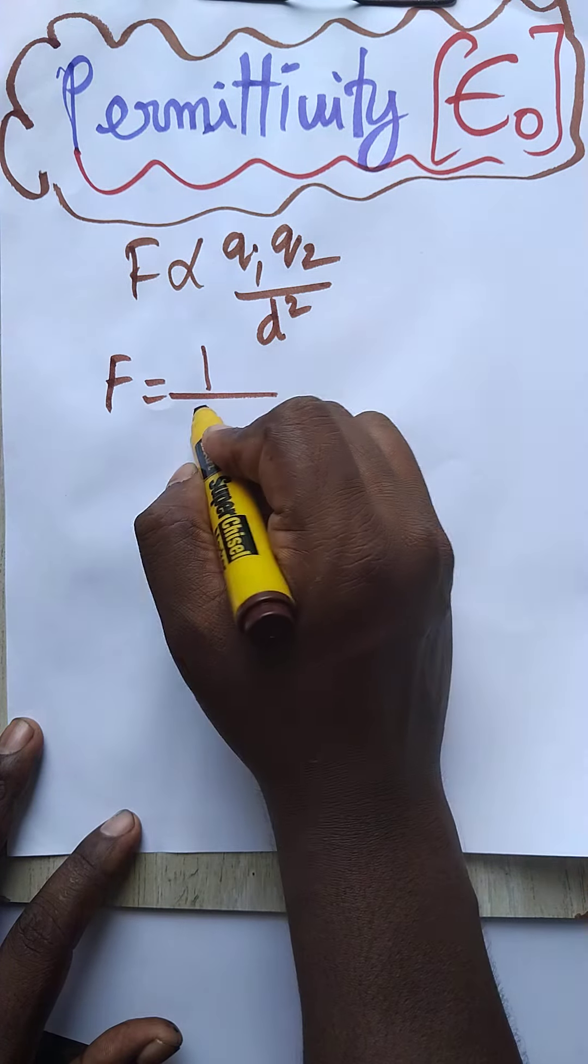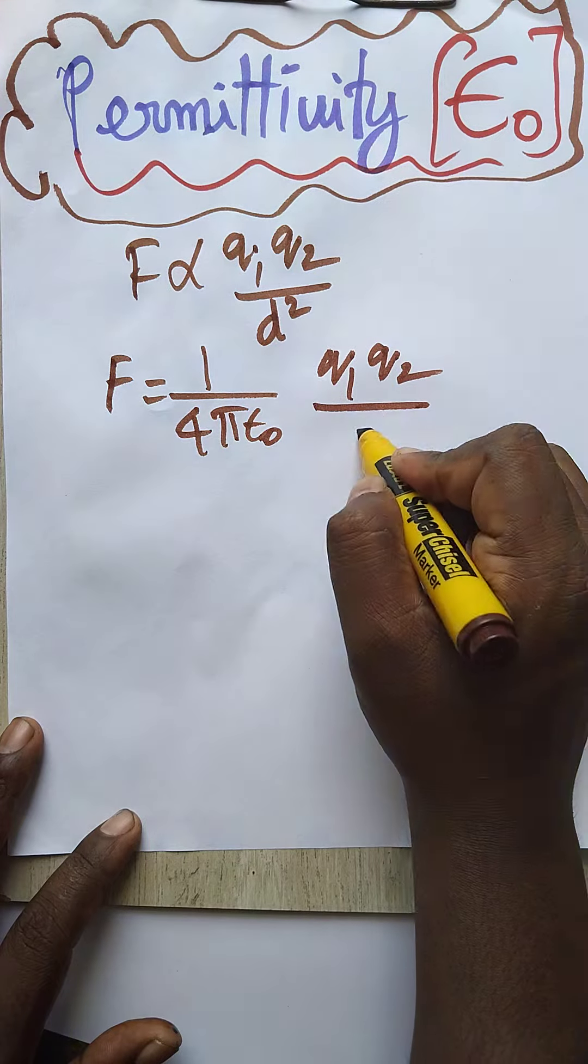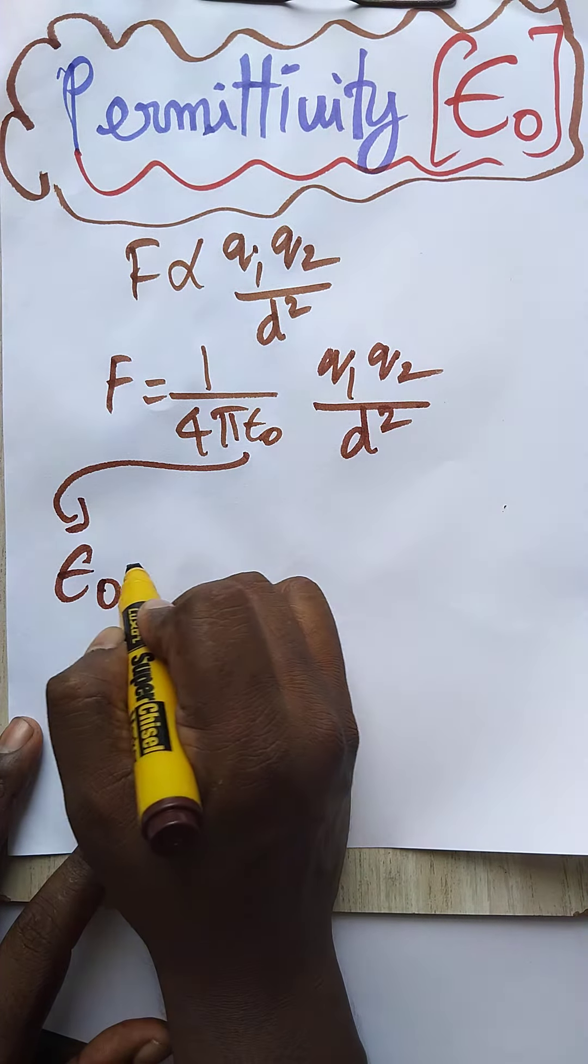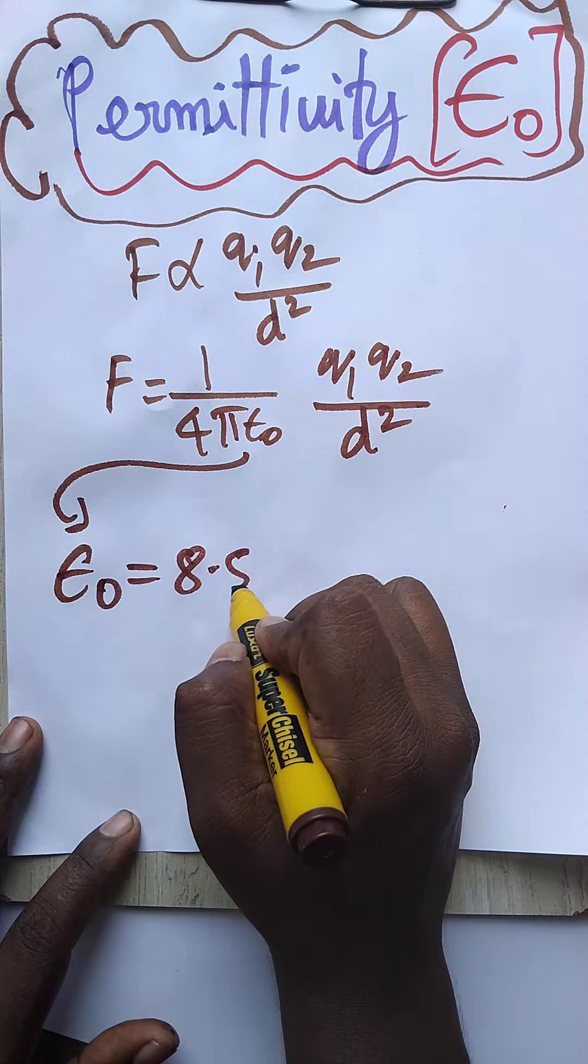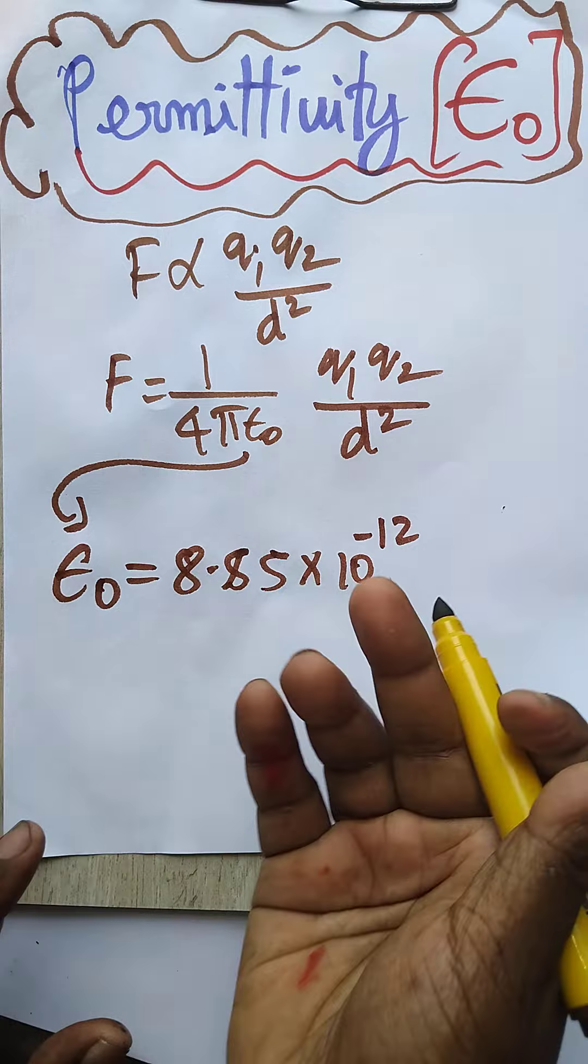We'll get F = 1/(4π ε₀) × q₁q₂/d². This is permittivity. So ε₀ is equal to 8.85 × 10⁻¹². Now, what is the unit of permittivity?